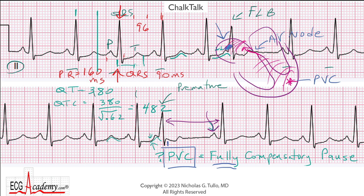Because usually if a PAC occurs, that PAC is so close to the sinus node that it will often reset the sinus node and throw off the rhythm, so the next P wave will either occur a little early or a little late — more often it will not occur on time. So this isn't 100% accurate or predictive of a PVC, but it certainly supports this being a ventricular premature beat and not an atrial. So what we have is simply a normal sinus rhythm with a prolonged QT interval and frequent PVCs with fully compensatory pauses.